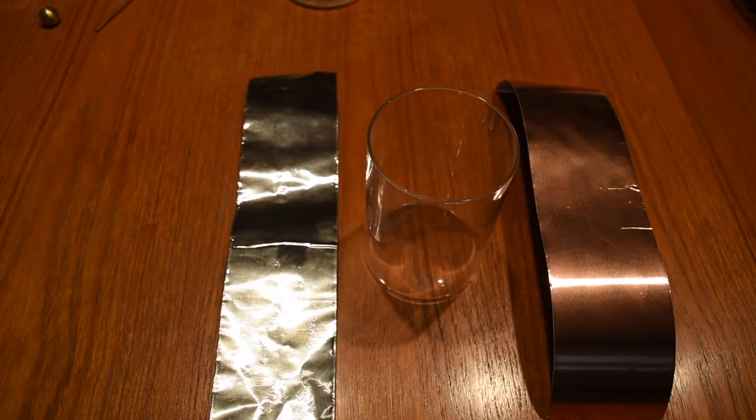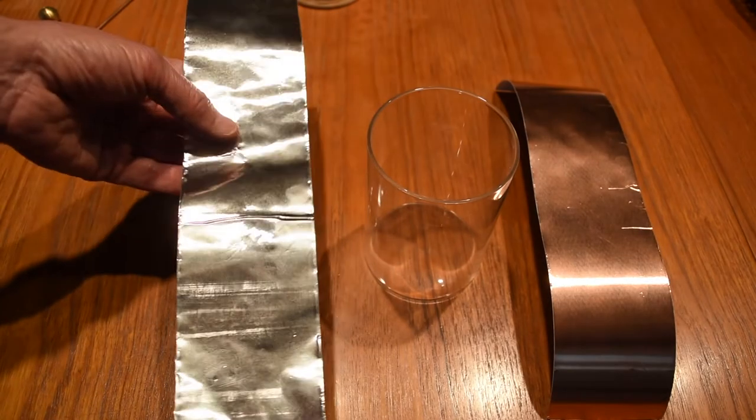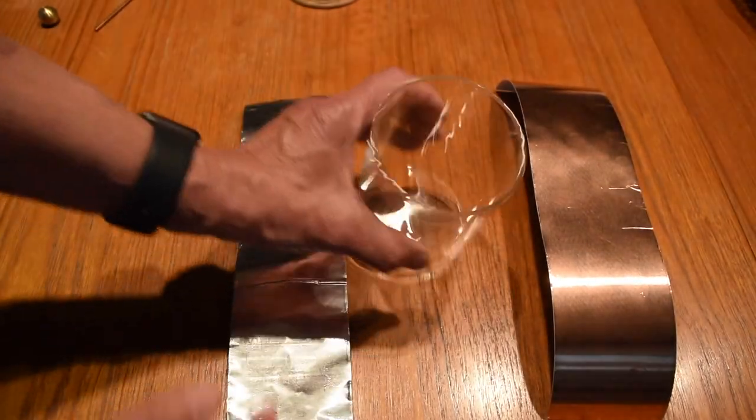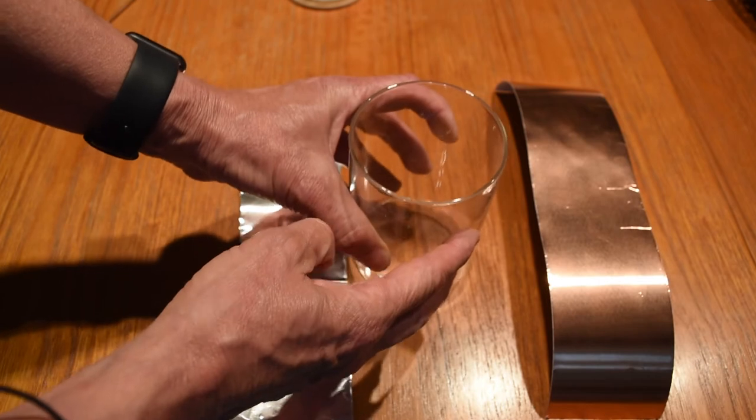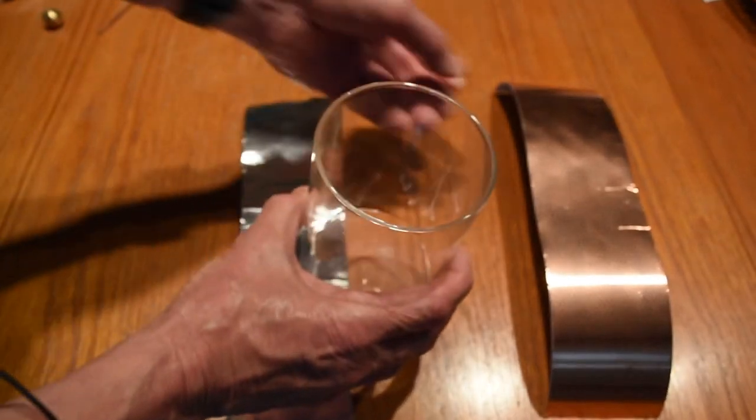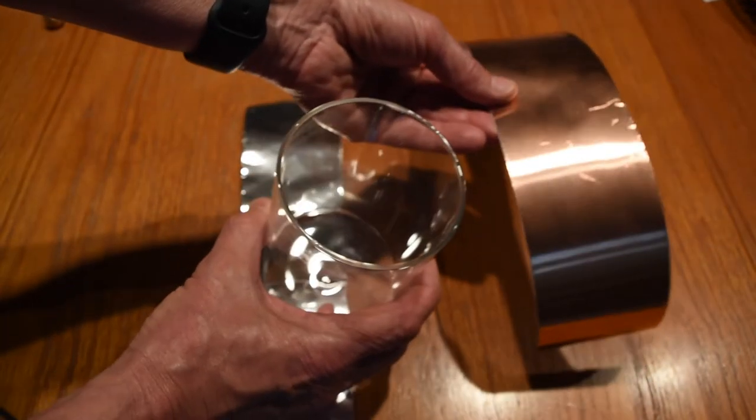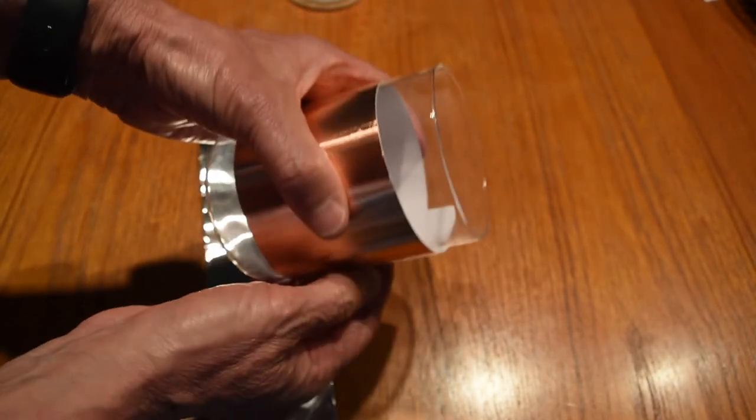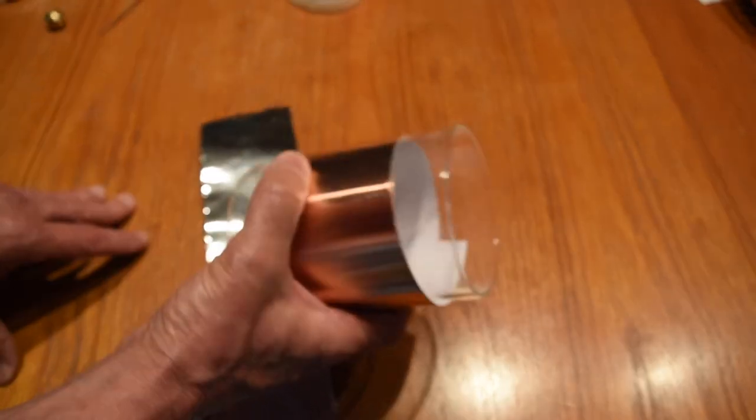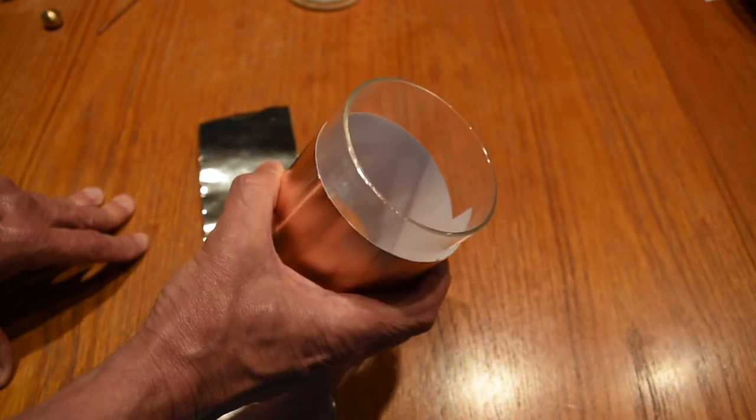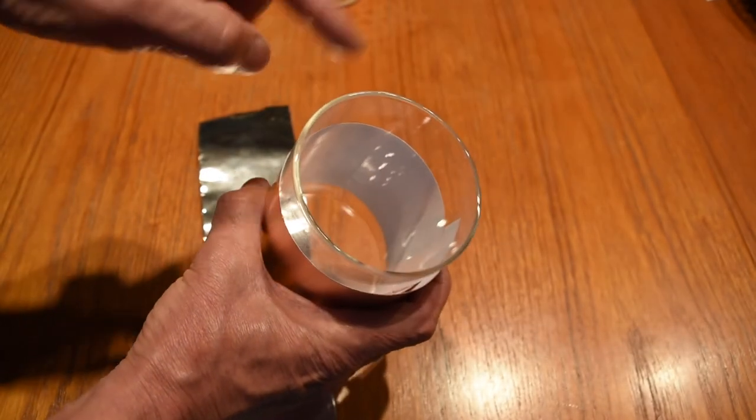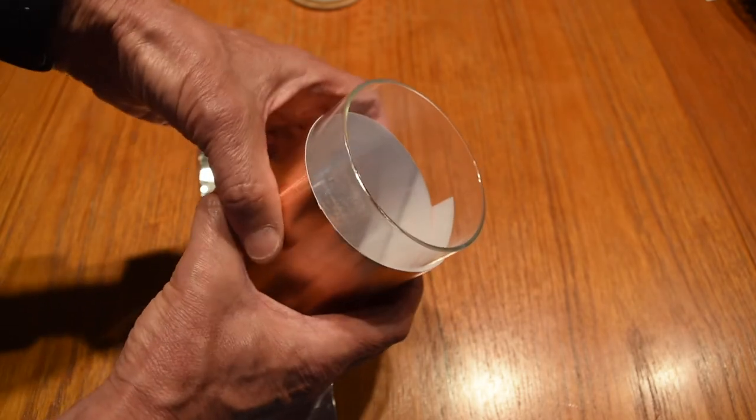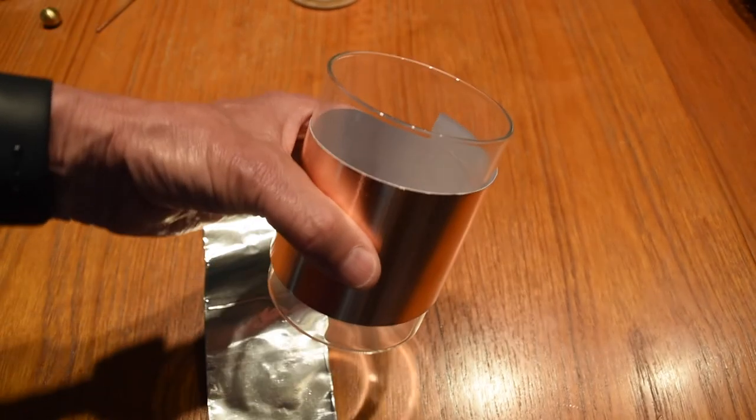I've cut a piece of the aluminum tape that I will put around the inside of the jar as the inside conductor of our capacitor, and I've cut a piece of the copper tape that I will put around the outside of our jar as the outside conductor of our capacitor, and of course the jar will be the insulator between the two conductors of our capacitor.